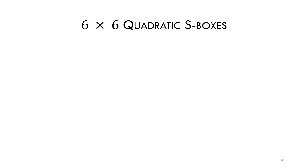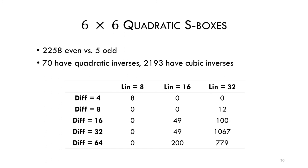Let's look at some of the properties of the classes that we found. We found that only 5 classes have odd parity, and all the others are even. 70 classes have a quadratic inverse, and all the others have a cubic inverse. In a follow-up work, which is also presented at this conference, we also found out that all of those 70 classes are affine equivalent to their own inverse.